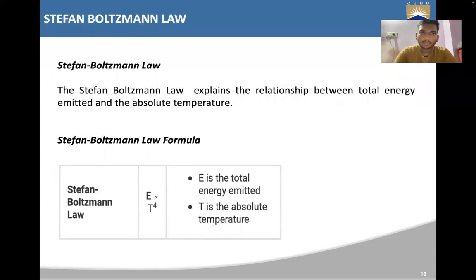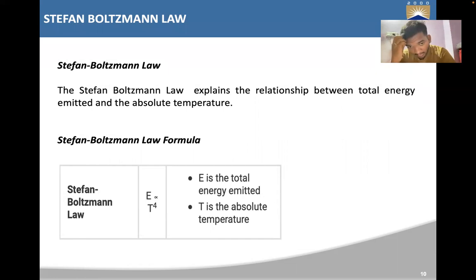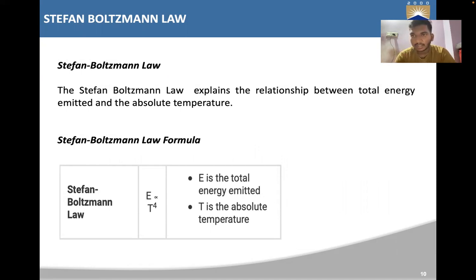Stefan-Boltzmann's Law explains the relation between total energy emitted and the absolute temperature. The total energy emitted E is directly proportional to T to the power of 4, where T is the absolute temperature. These three laws are useful for predicting the characteristics of black body radiation.